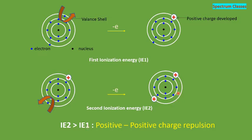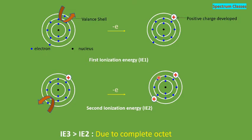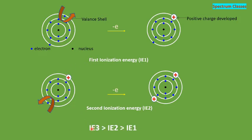Further, if we try to remove the next electron from an already doubly charged ion, it is even more difficult, especially since the ion now has a complete octet. Therefore, the third ionization energy is greater than the second ionization energy due to the complete octet. So the relationship between successive ionization energies is: third ionization energy > second ionization energy > first ionization energy.